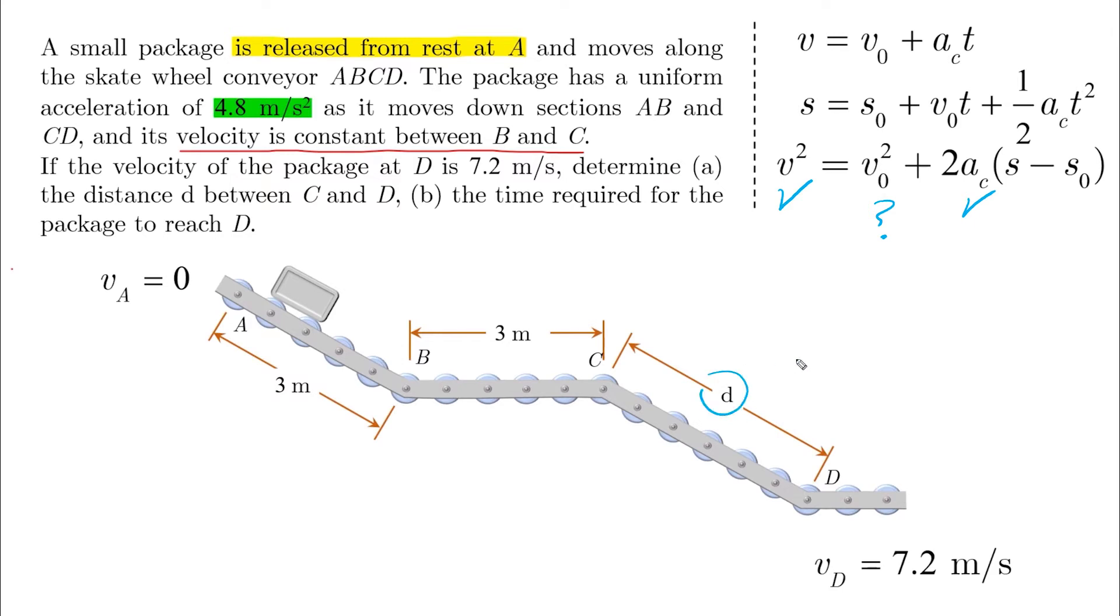Since the velocity of B and C are equal to each other, we need to start by finding the velocity of B from the first section. To do that, we have the velocity at A, the distance, and the acceleration. So we can use the third equation as follows.